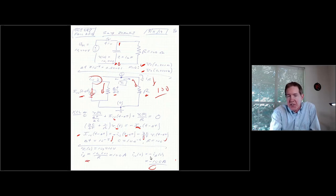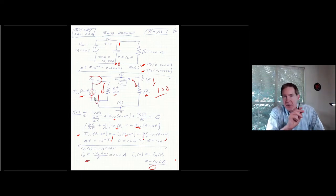So, again, the reason it's minus is the orientation for my current going through the capacitor is down. All right. So I have an initial value of branch current of minus 100 amps.